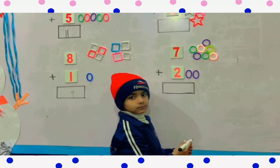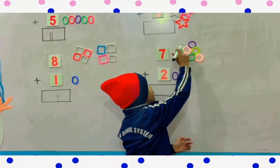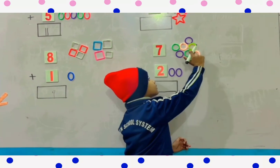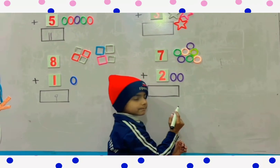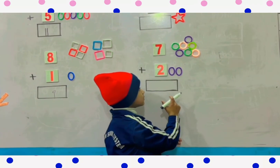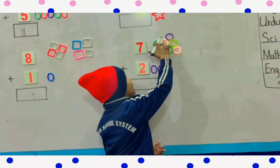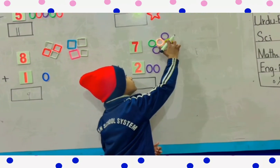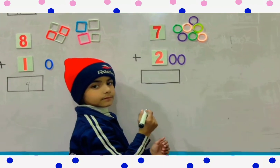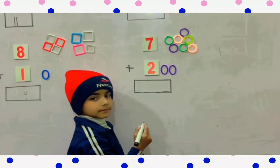Count the circle shapes. How many circle shapes are there? One, two, three, four, five, six, seven. Very good. Now count the oval shapes. How many total shapes are there? One, two, three, four, five, six, seven, eight, nine. So how many total shapes are there? Write the answer.